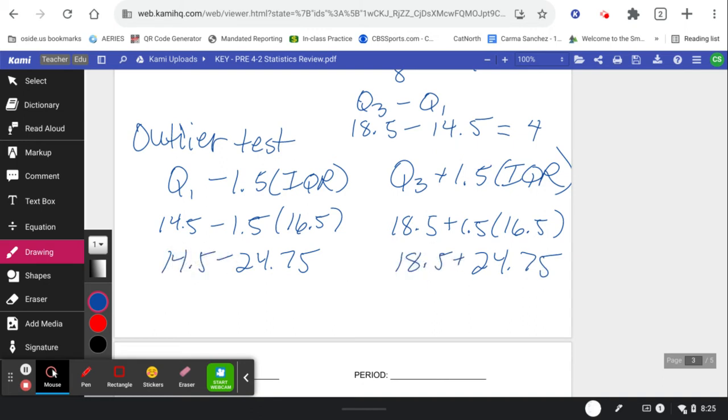And then on this one, we're going to subtract 14.5. So 14.5 minus 24.75. I'm going to get a negative number. So for sure, I don't have any numbers lower than that because I don't have any negative numbers. 18.5 plus 24.75. Do I have any data bigger than 43.25?